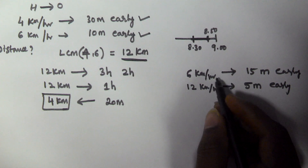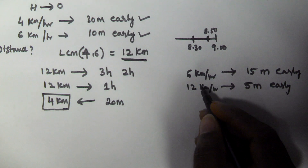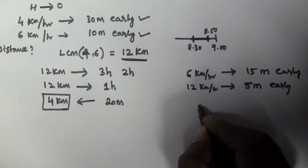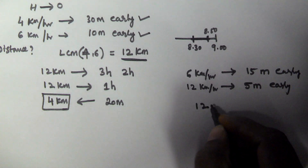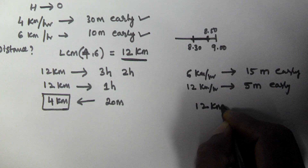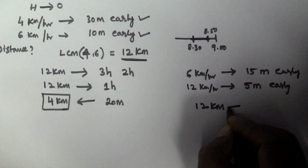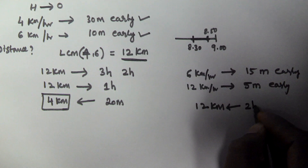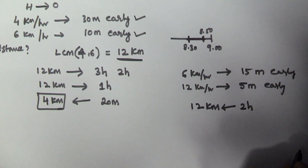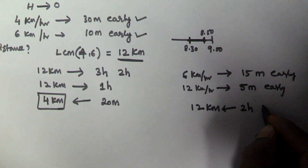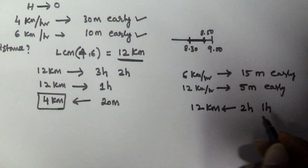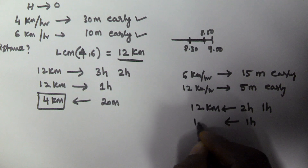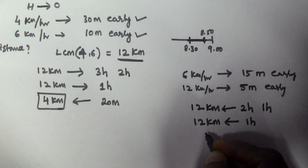In both cases the distance going to the office is constant, so I take it as the LCM of both speeds — that is LCM of 6 and 12, which is 12. If the distance is 12 km and on the first day he travels at 6 km/h, he takes 2 hours. On the second day at 12 km/h, he takes 1 hour. The difference between 2 hours and 1 hour is 1 hour, and 1 hour implies 12 km.